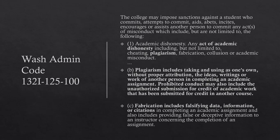This is covered by the Washington Administrative Code 132i-125-100. The college may impose sanctions against a student who commits, attempts to commit, aids, abets, incites, encourages, or assists another person to commit any act of misconduct, which includes academic dishonesty — any act of academic dishonesty including but not limited to plagiarism.